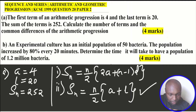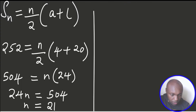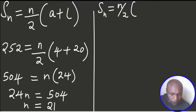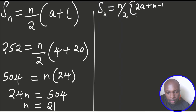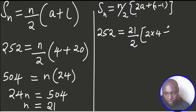Now that we have n = 21, we use the first formula to find the common difference: SN = n/2 × (2a + (n−1)d). This formula contains d, which we need. Substituting: 252 = 21/2 × (2×4 + (21−1)d), which gives 252 = 21/2 × (8 + 20d).